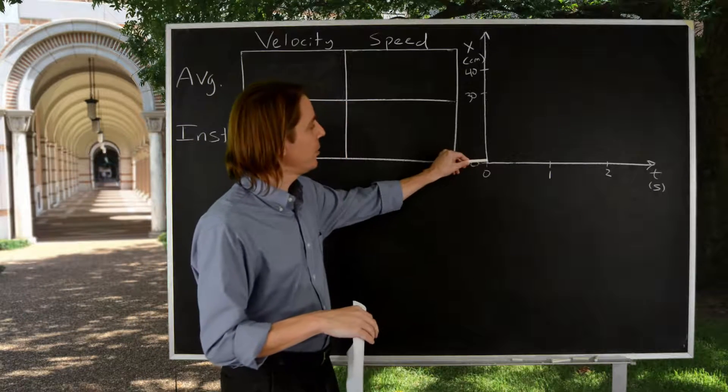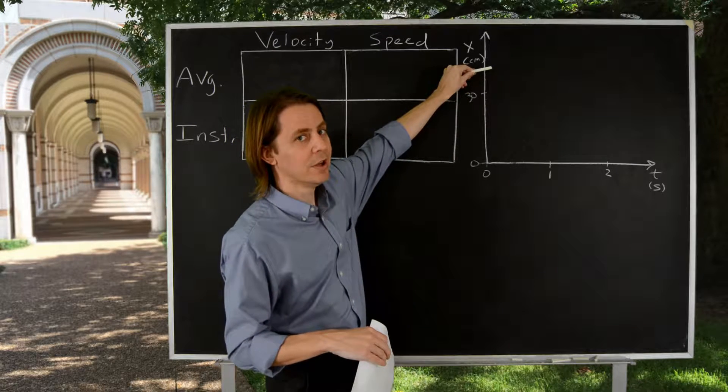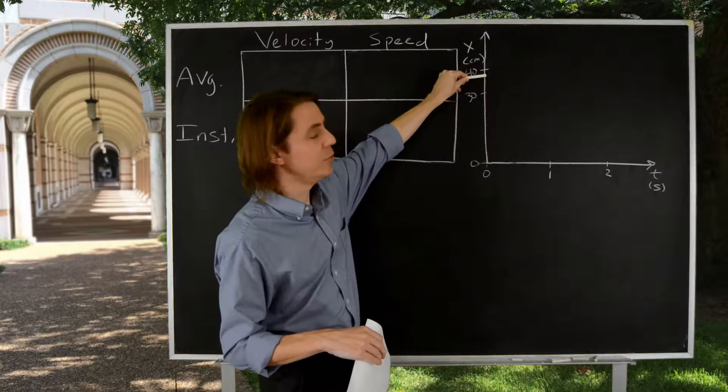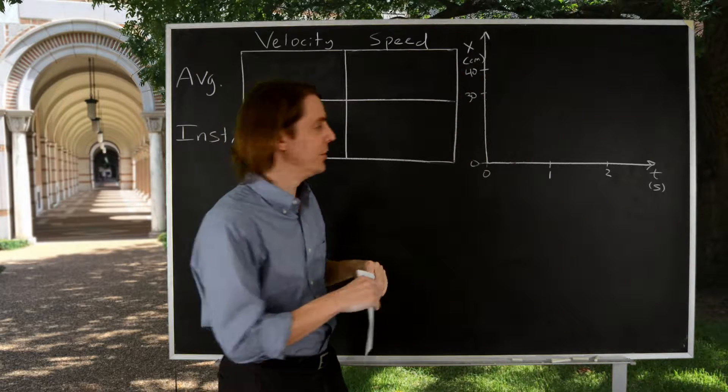We're going to imagine the chalk starts at the origin of the x-axis and moves to 40 centimeters in one second, and then in another second moves down to 30. So it moves a little faster at the beginning and then reverses direction and goes a little bit slower.